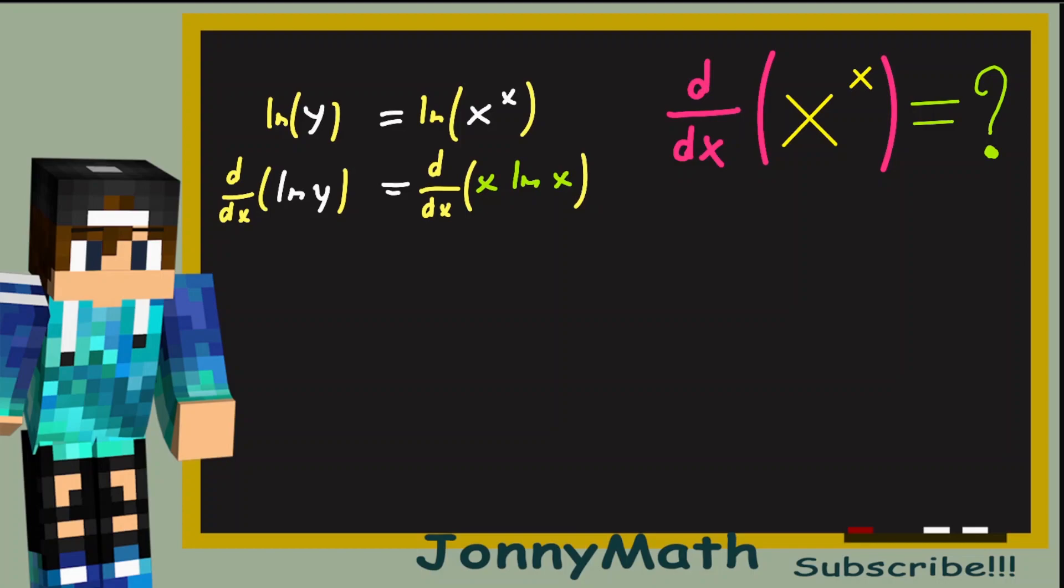But what is the derivative with respect to x of the natural log of y? Well, since y is a function of x, we can use the chain rule. So this is just 1 over y times the derivative of y, and the derivative of y is obviously dy over dx.